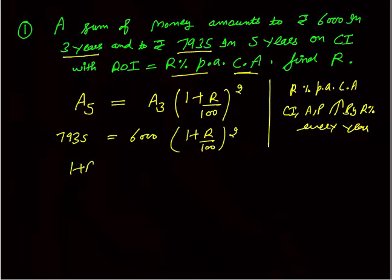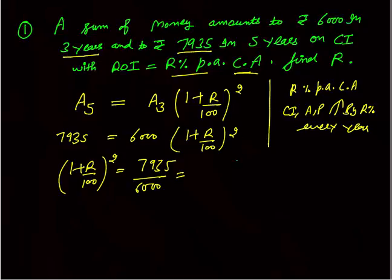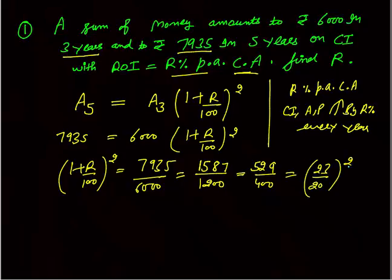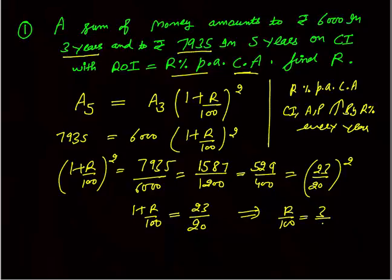Solving: (1 + R/100)² = 7935/6000. Cancelling by 5 gives 1587/1200, and dividing further by 3 gives 529/400. This is (23/20)², so 1 + R/100 = 23/20, which means R/100 = 3/20, giving R = 15%. The rate of interest is 15%.